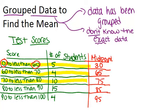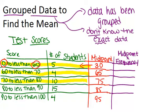Once we have the midpoint, the next step is to multiply each midpoint by the corresponding number of data points that were in that range. So in this case, that would be multiplying by the number of students. So for the first one, we're going to multiply 30 by 5 to get 150.